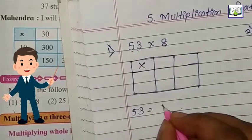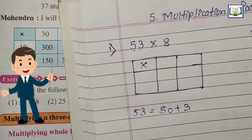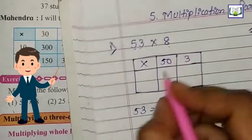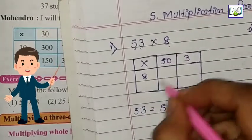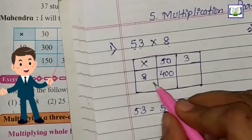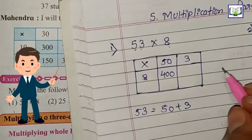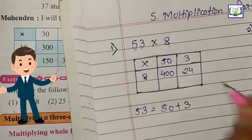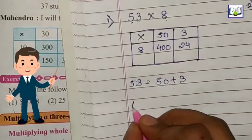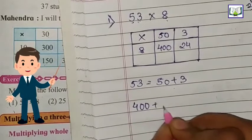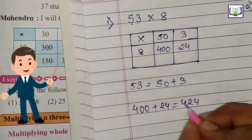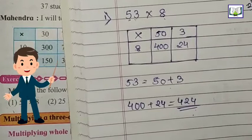Now we will break 53. 53 means 50 plus 3. So we will write here 50 and 3. We are going to multiply by 8. 8 times 0 is 0, 8 times 5 is 40, which is 400. Then 8 times 3 is 24. Now we will add this: 400 plus 24 equals 424. So this is the answer.